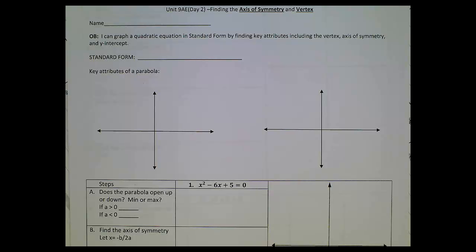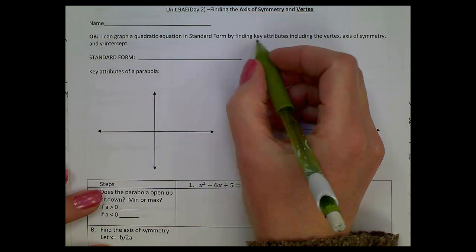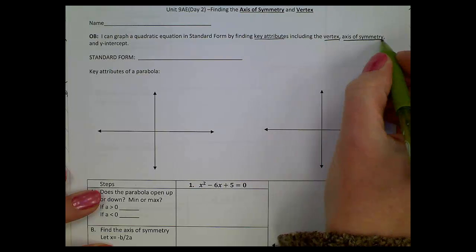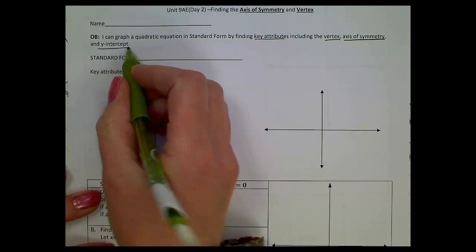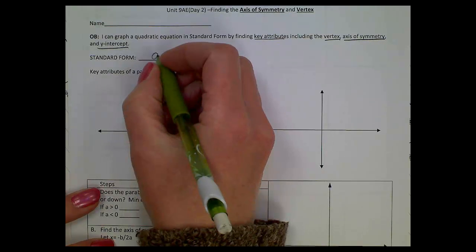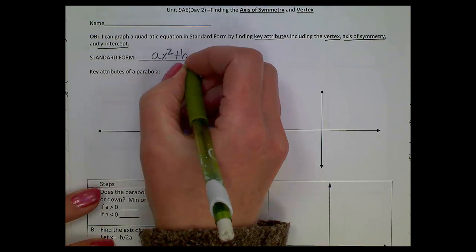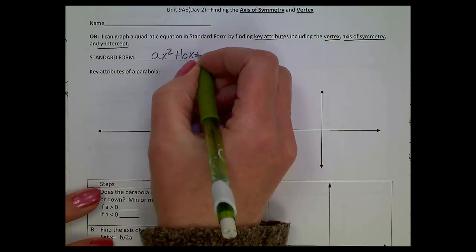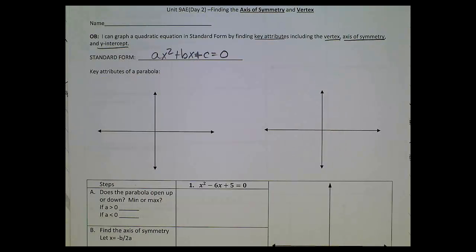Okay algebra students, today we're going to start graphing parabolas, quadratic equations, whatever you want to call them. Our objective for the day is I can graph a quadratic equation in standard form by finding key attributes, including the vertex, axis of symmetry, and y-intercept. Now remember, standard form of a quadratic equation is ax² + bx + c = 0. These equations must be set equal to zero.